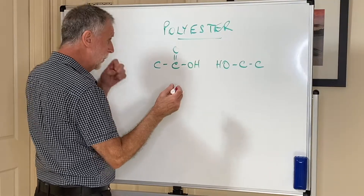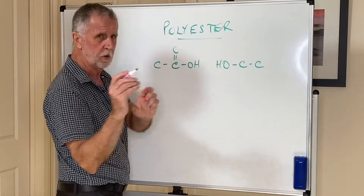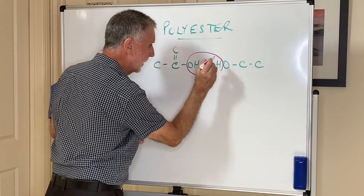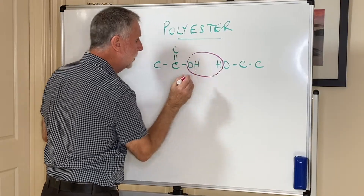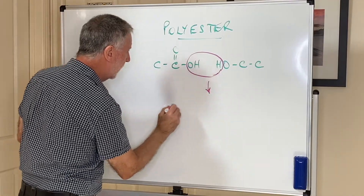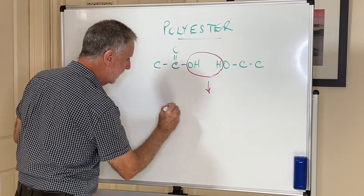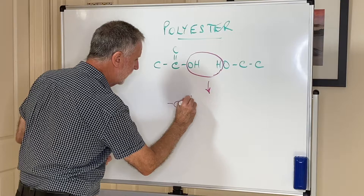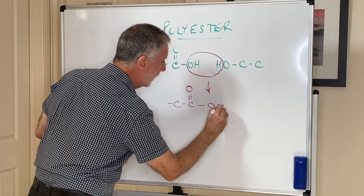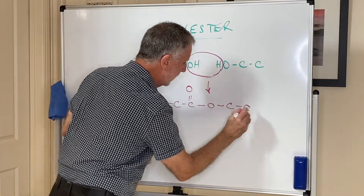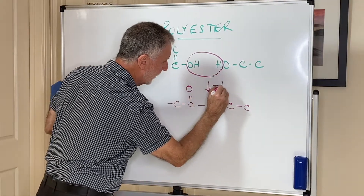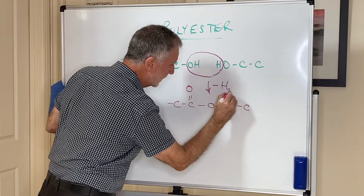When we do this, the alcohol loses the H and the carboxylic acid loses the OH. So that means we create this link: C-C-O-O-C-C. This is your ester link, and water is eliminated as that happens. This is a condensation reaction.